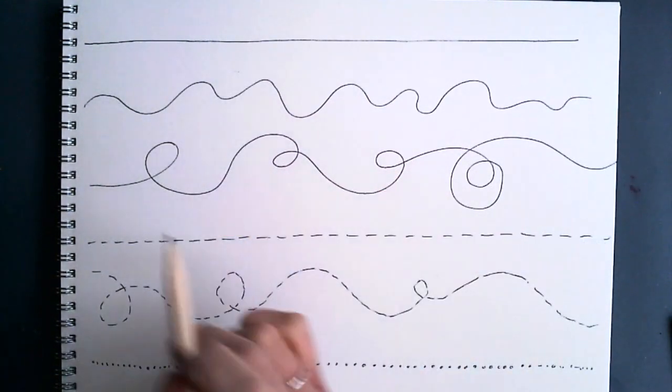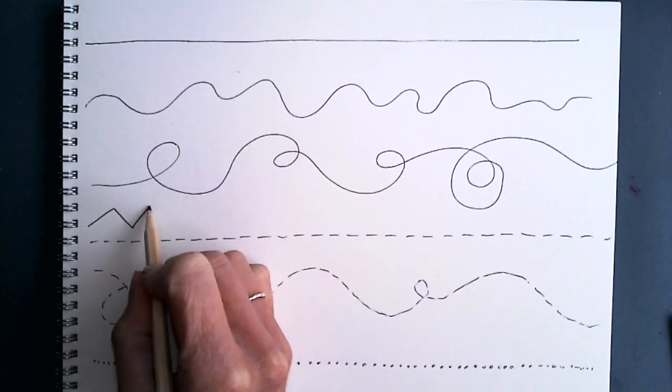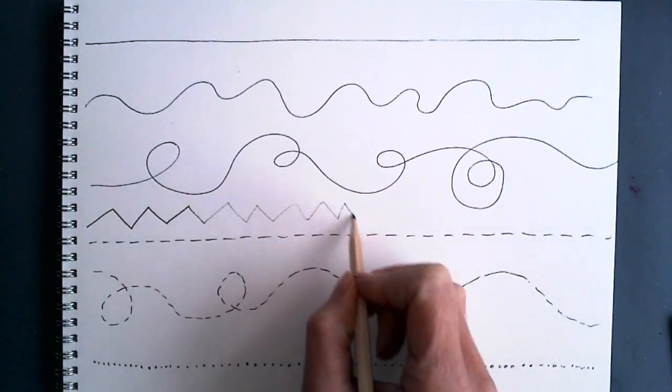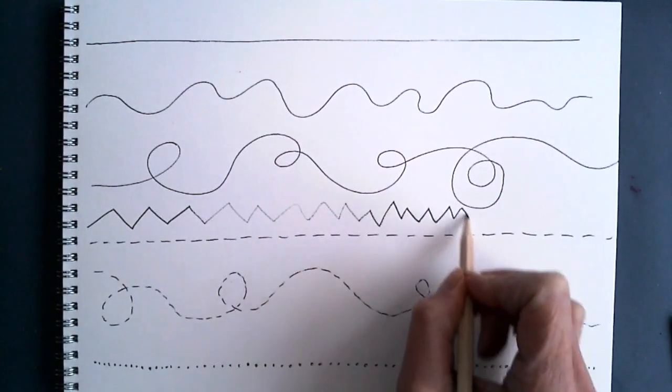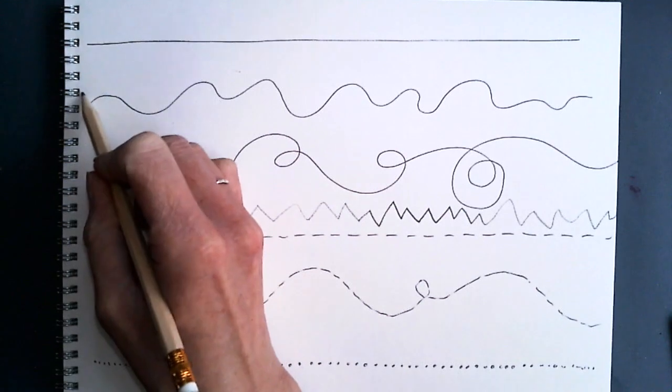Lines can change depending on what you use to create them. I can press hard with a pencil and get a hard line, and light with a pencil and get a light line. Can you see how the zigzag is darker and then lighter?